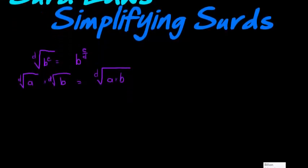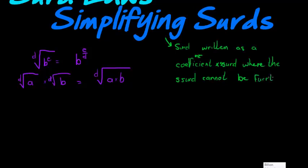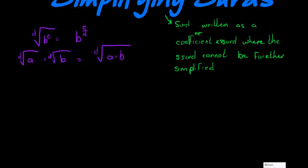How is that going to help us simplify a CERD? A simplified CERD means that the CERD is written as a coefficient times a CERD where that CERD cannot be simplified further.